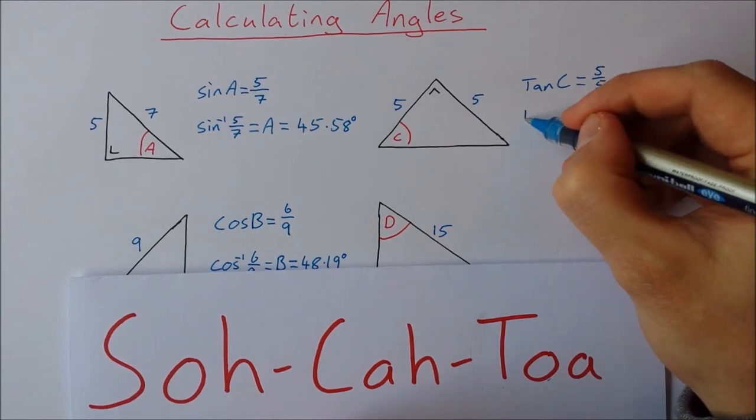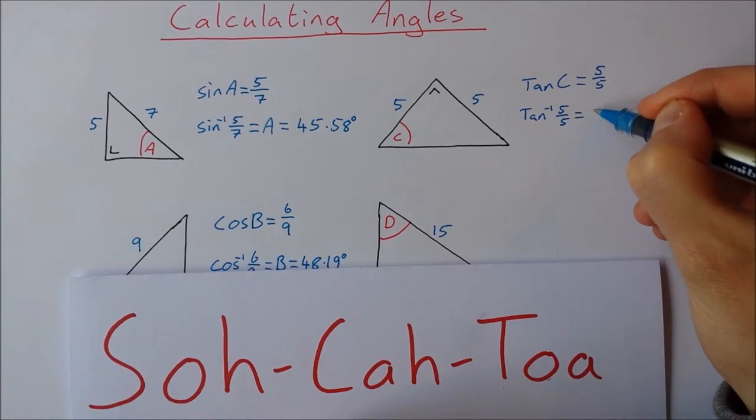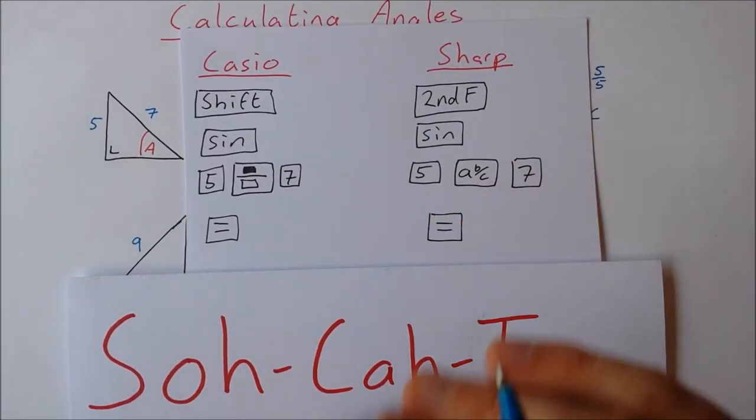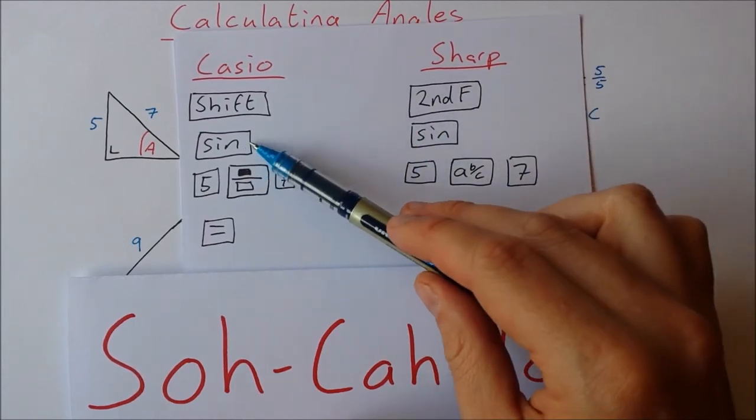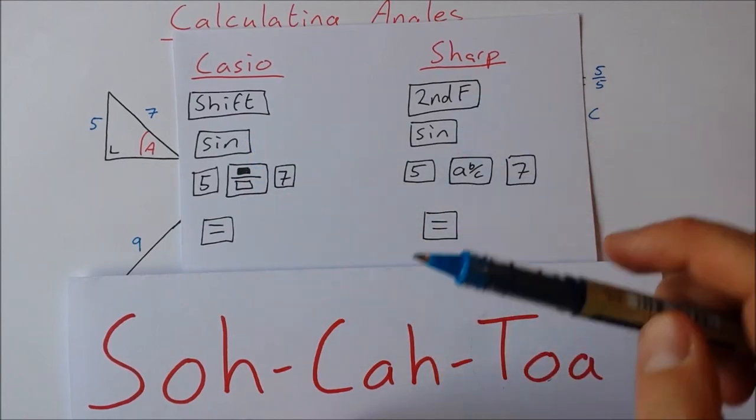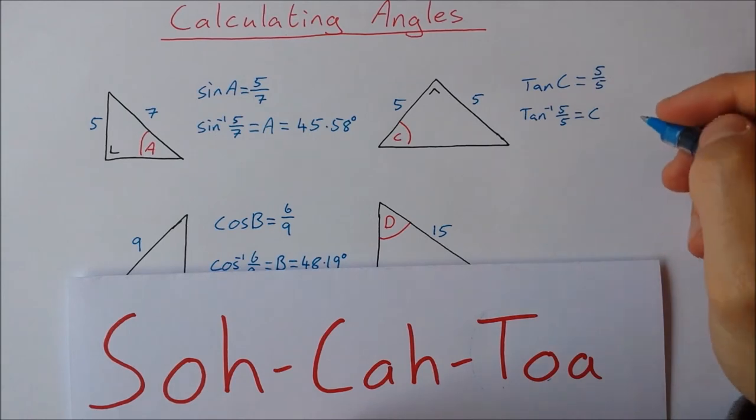So I'm going to find the tan inverse of 5 over 5. That will give me my angle C. So go to your calculator. You're doing this again except instead of sine we're going to type tan. So shift tan or second function tan and then 5 over 5 and the answer you're going to get is 45 degrees.